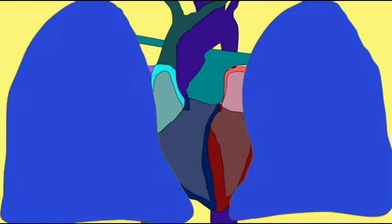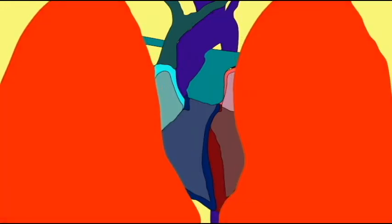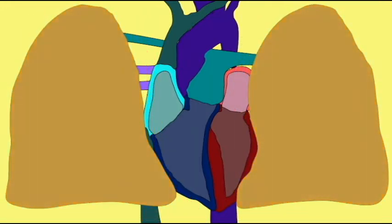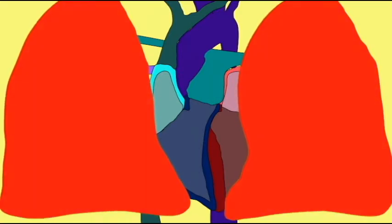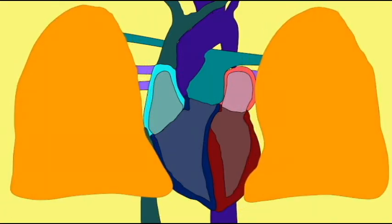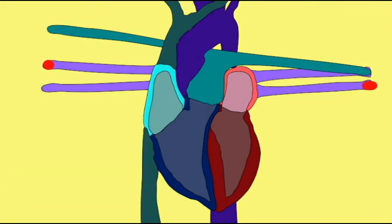So this blood is sent to only one place when it leaves the right ventricle, to the lungs, and in the lungs there is gas exchange as oxygen from our inhaled air enters the blood, turning this deoxygenated blood to oxygenated.